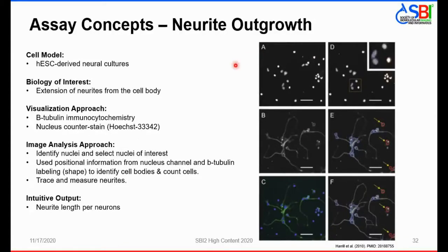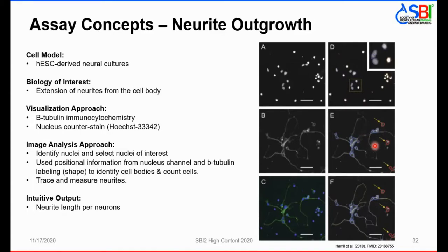The neurite outgrowth assay concept: our cell model is human embryonic stem cell-derived neural cultures. The biology of interest is the extension of neurites from the cell body, and the visualization approach is beta-3 tubulin immunocytochemistry with a nucleus counterstain. For image analysis, we identify and select nuclei, use positional information from the nucleus channel superimposed on the beta-3 tubulin labeling to identify cell bodies and conduct cell counts, then trace and measure the neurites. The intuitive output is neurite length per neuron.